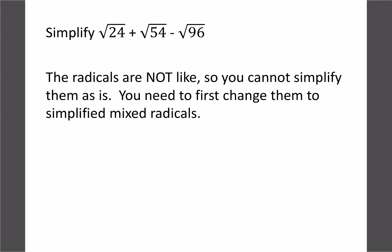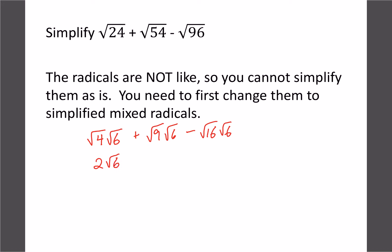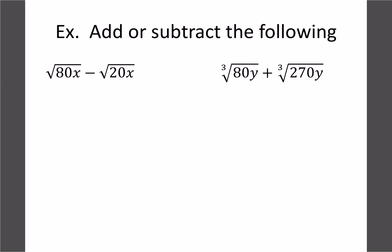For root 24 minus root 54 plus root 96, we simplify each: root 24 breaks into 4 and 6 giving 2 root 6; root 54 breaks into 9 and 6 giving 3 root 6; and root 96 breaks into 16 and 6 giving 4 root 6. We pick the biggest perfect square factor each time. Now combining: 2 plus 3 minus 4 equals 1, so the answer is 1 root 6, or just root 6.